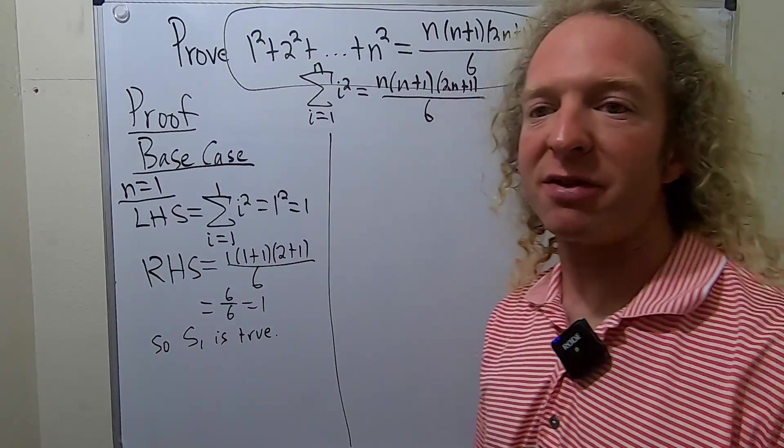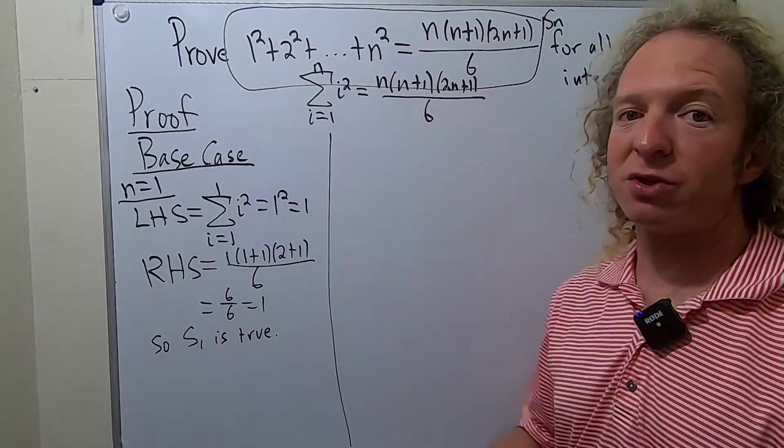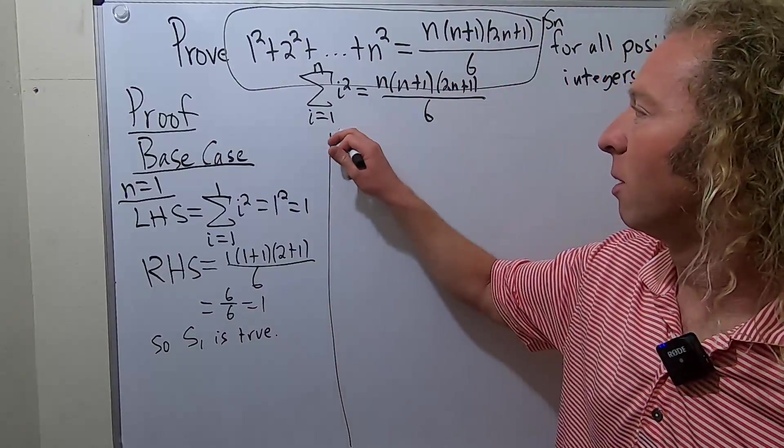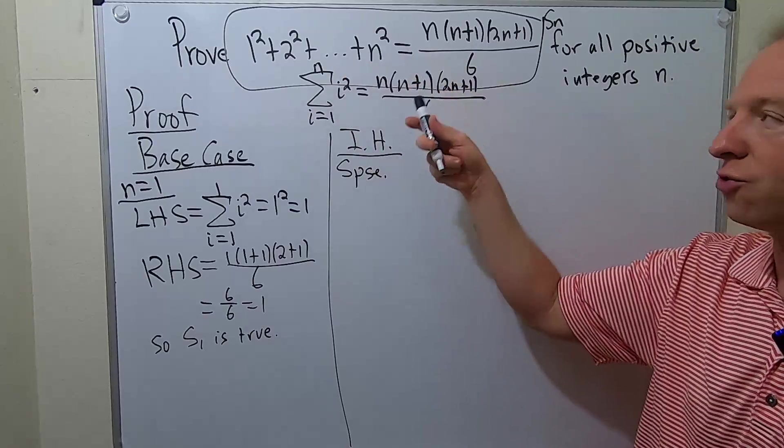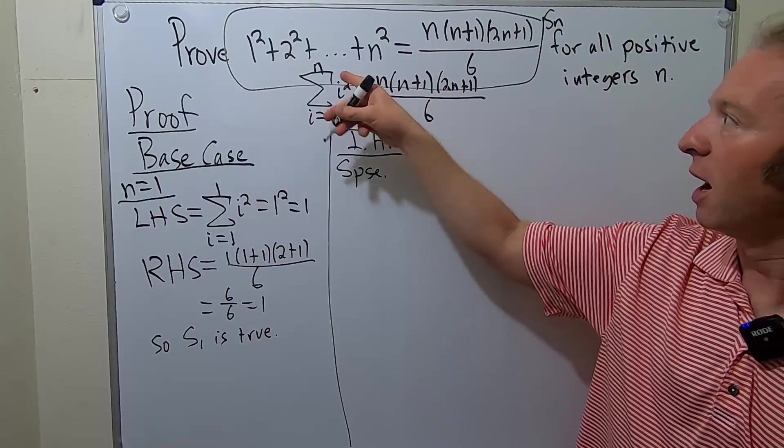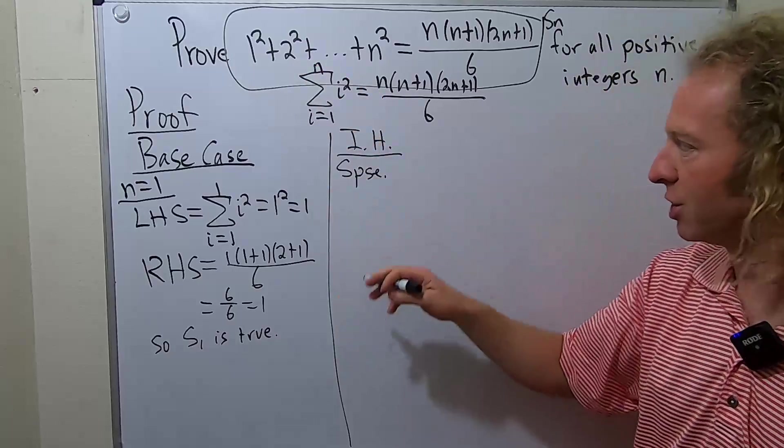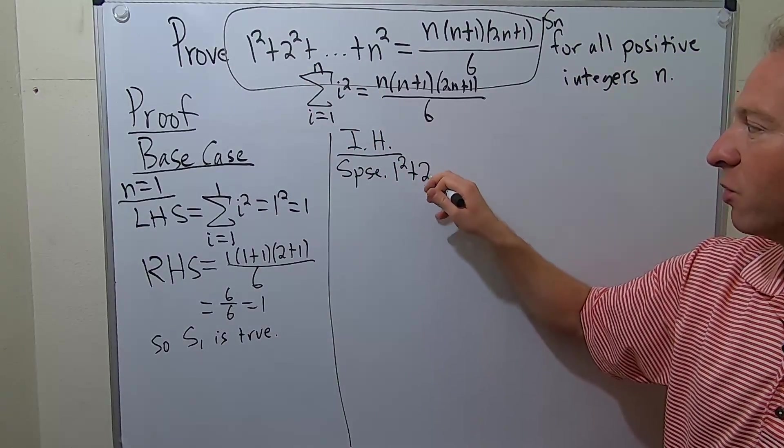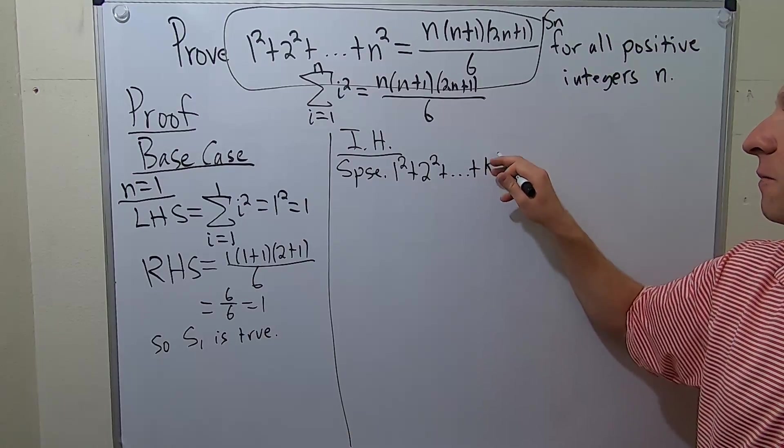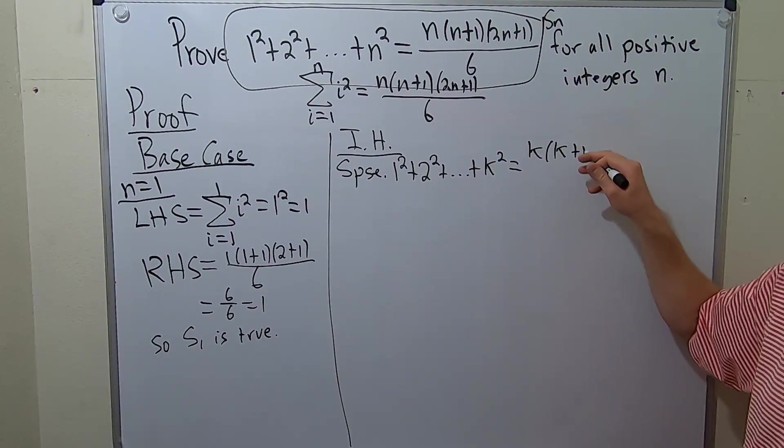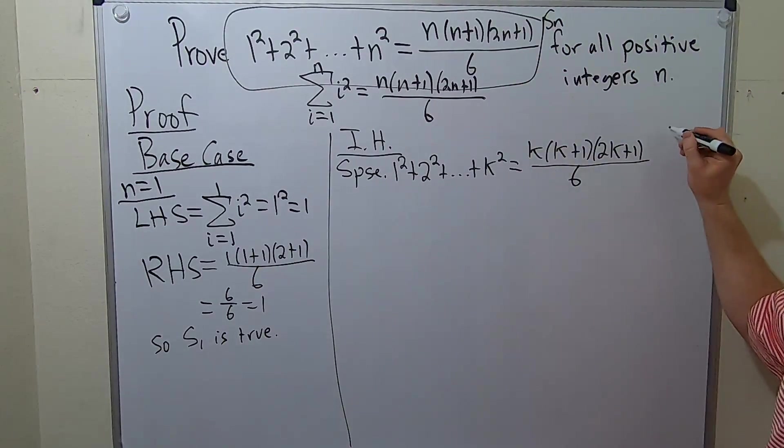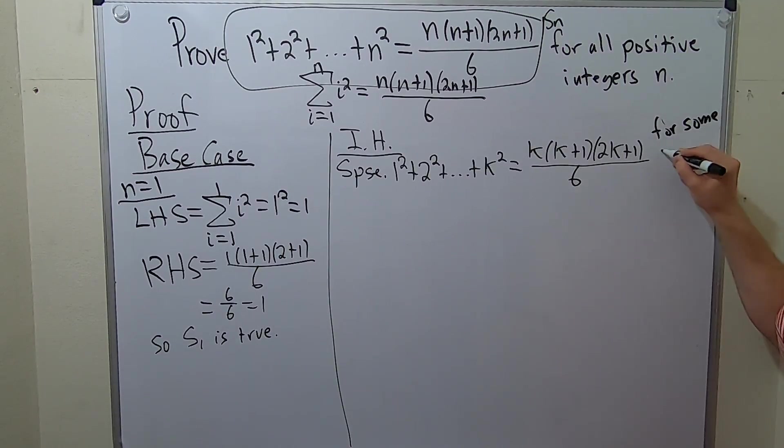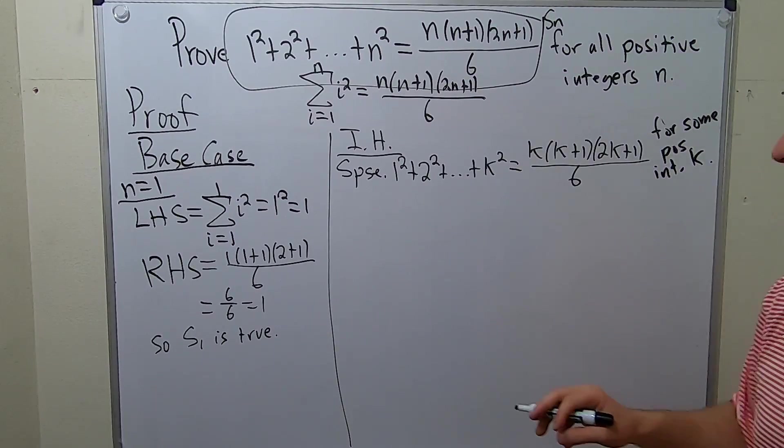The next step is the induction hypothesis. That basically means that we get to assume our statement is true for some k. So I'll put IH, induction hypothesis. So suppose we get to assume that this is true when n is equal to k. So suppose that 1² + 2² + ... + k² is equal to k(k+1)(2k+1)/6. And this should be true for some positive integer k. So that is our induction hypothesis.